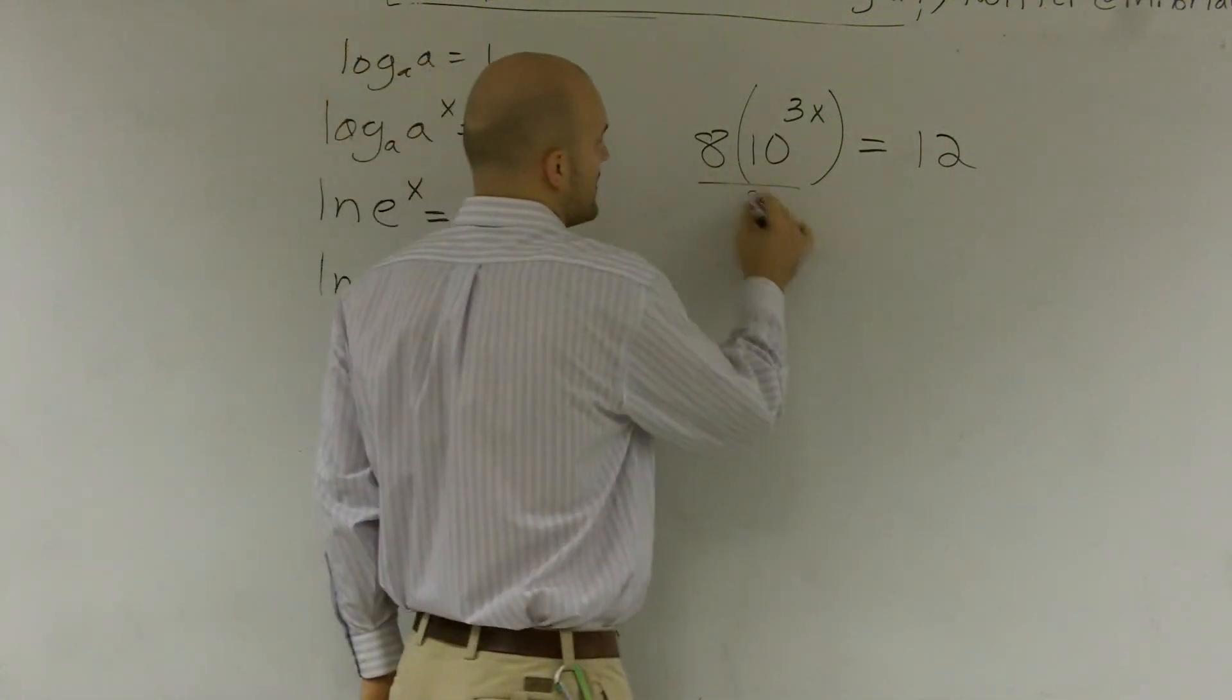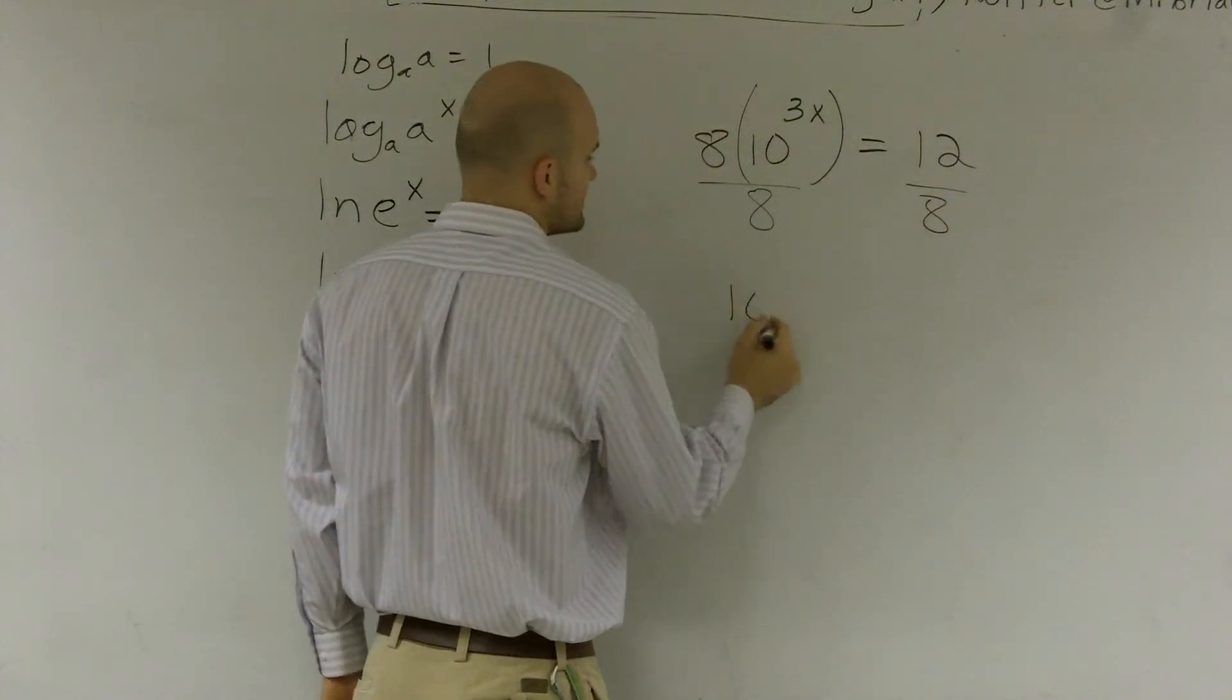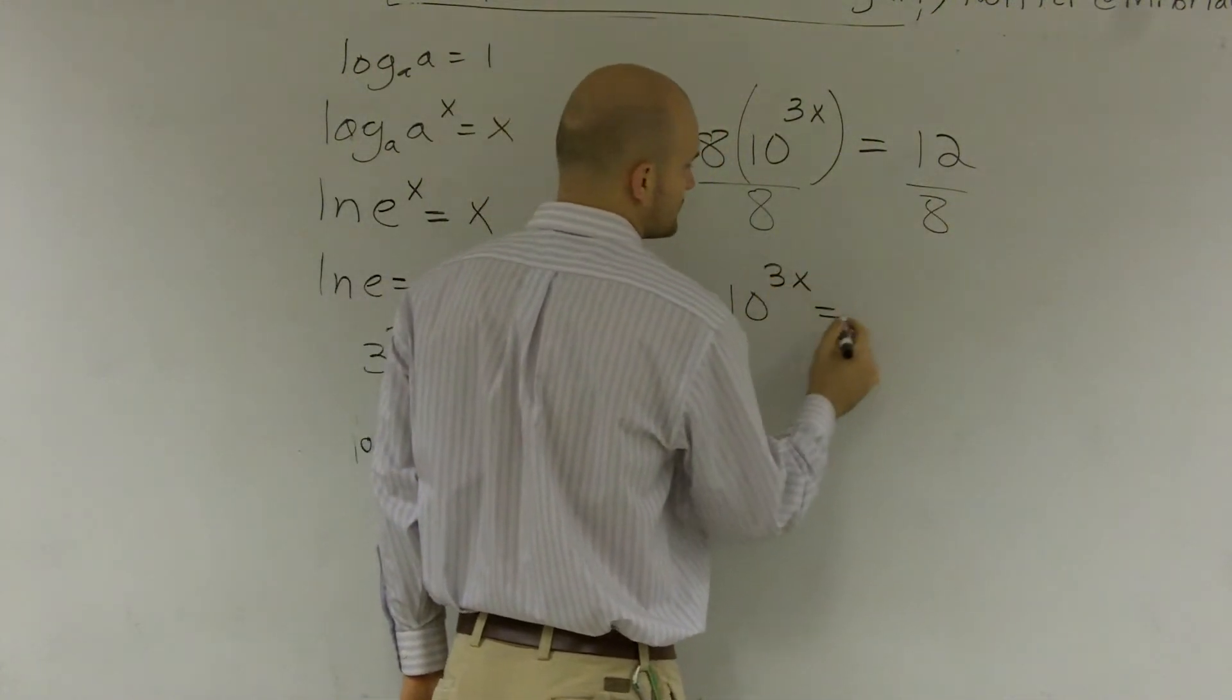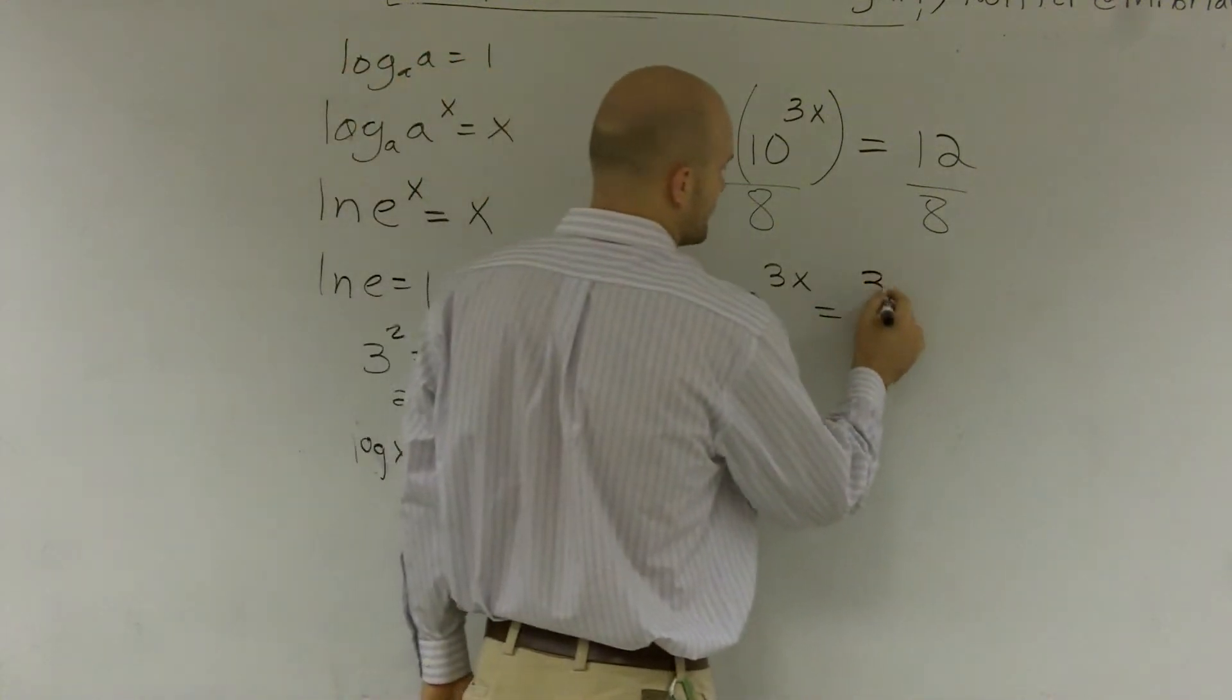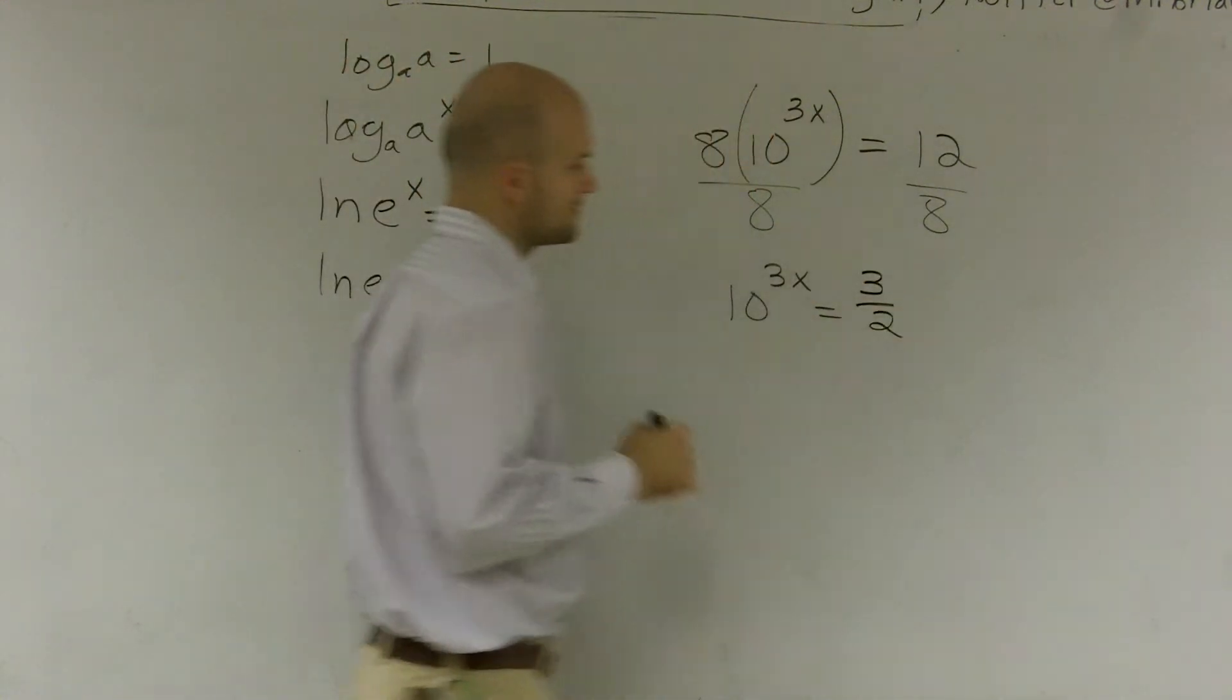So I'm going to divide by 8 first on both sides. So I have 10 to the 3x is going to equal 12 divided by 8, which would be 3 halves, all right?